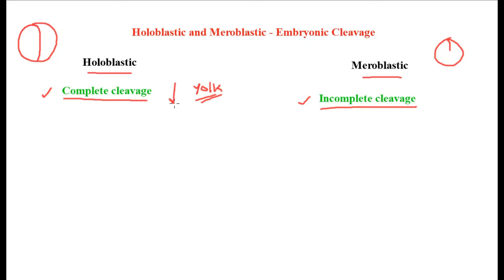Yolk is a bulky part present in the egg. Where there is a very small amount of yolk, it is easy for the cleavage to completely penetrate through the egg. But where there is very high yolk content, it is really bulky and difficult for cleavage to actually take place completely — so partial or incomplete cleavage occurs. Therefore, holoblastic is complete cleavage where there is less yolk, and meroblastic is incomplete cleavage where there is very high yolk.